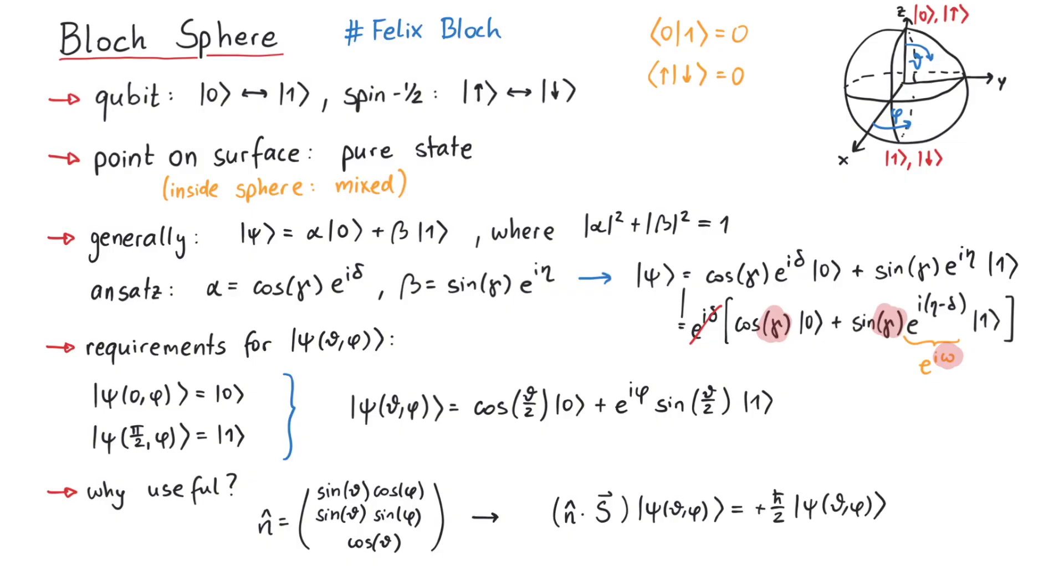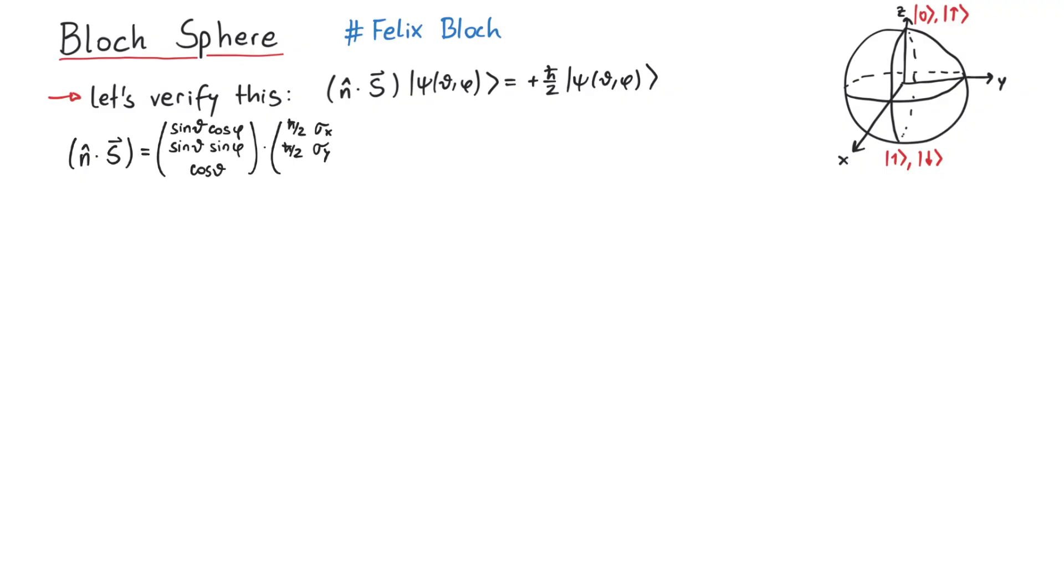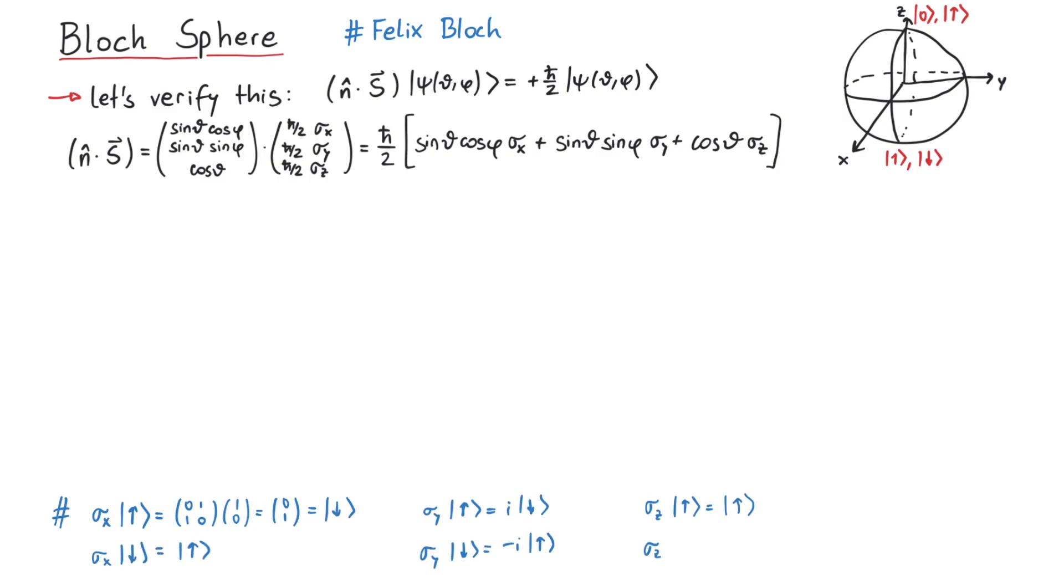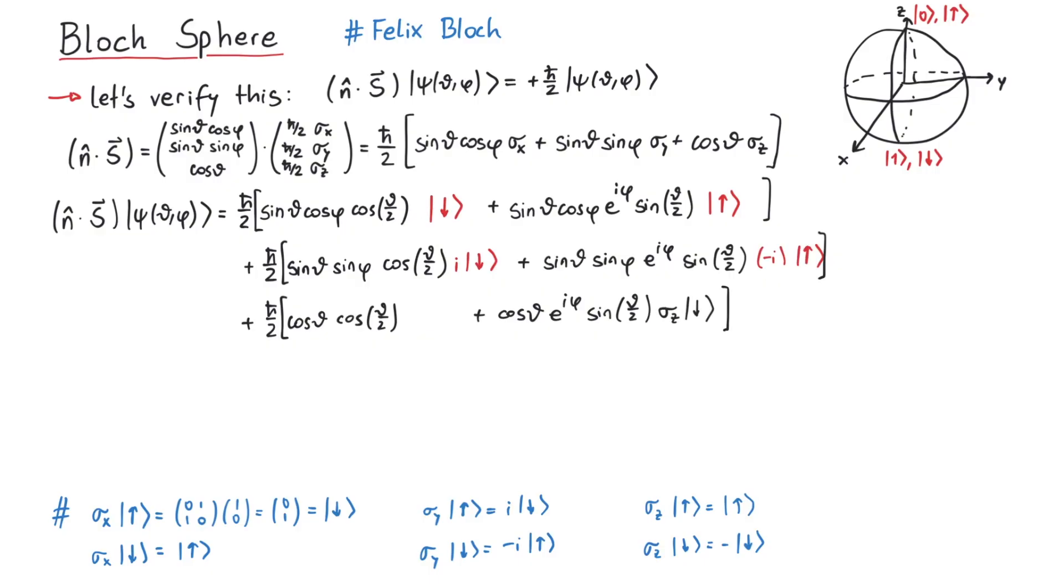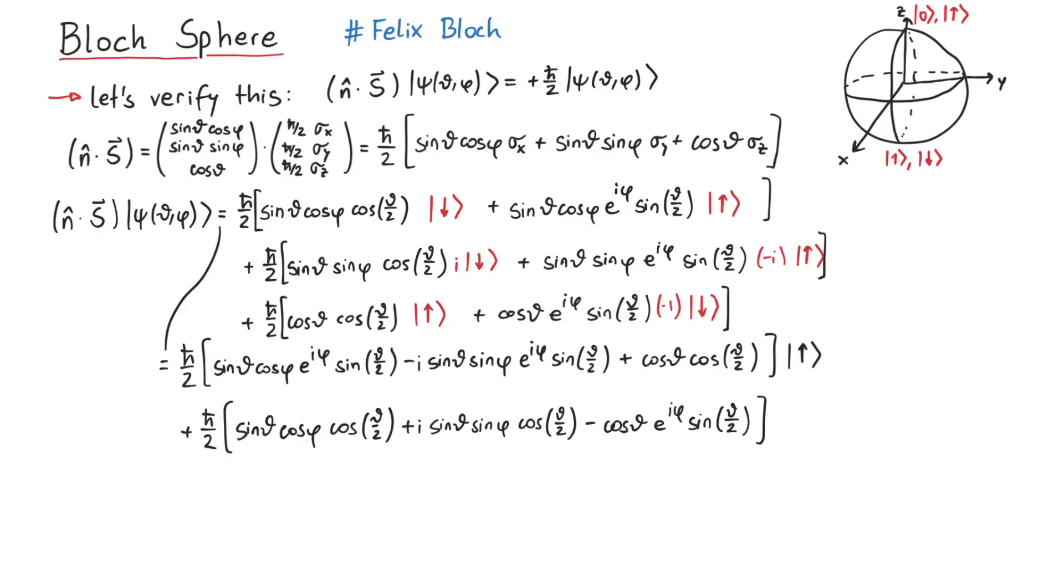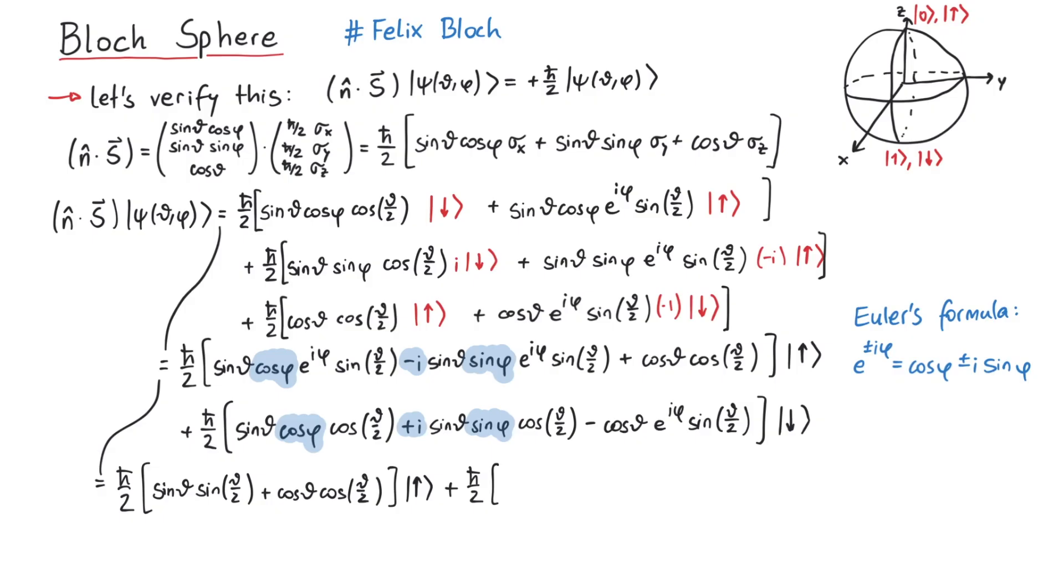We can verify this by writing the spin operator in the direction n by using Pauli matrices and calculating how every Pauli matrix acts on a basis state, which we will now denote by up and down arrows. When we let the spin operator act on psi, we get many terms, where we can first let the Pauli matrices act on up and down. After isolating the coefficients of the basis states, we can further simplify the terms by using Euler's formula. Finally, we can use some trigonometric identities to reduce everything back to psi.